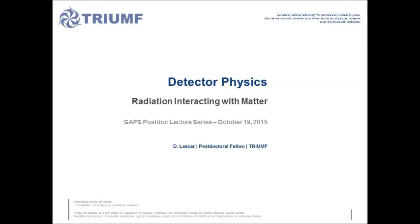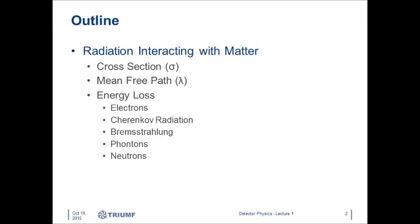I'll post homework assignments. I'll give them on Monday and post them probably Wednesday night so you have some time to work on it, but nothing that's hanging over your head for too long. So let's start with some basics of detector physics — in particular, how radiation interacts with matter. That's the starting point for basically everything we're going to be doing. In this lecture, we're going to go through an introduction of the cross-section, introduce the mean free path, and go over some of the methods of energy loss that radiation experiences as it interacts with matter.